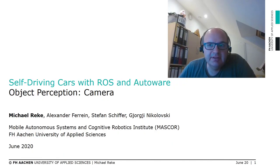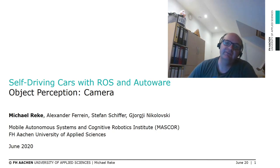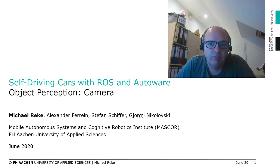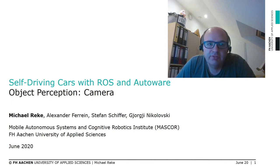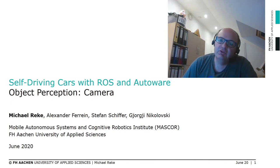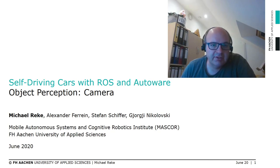Elon Musk says you don't need any other vision system than cameras for self-driving cars, and LiDARs are useless. Obviously this is something to be discussed, but it shows how important cameras are for autonomous driving. Hello to everybody, my name is Michael Reke, and together with my colleagues Alexander Ferrain, Stefan Schiffer, and Georgi Nikolovski from the University of Applied Science in Aachen, we will introduce you to camera as a sensor system for object detection.